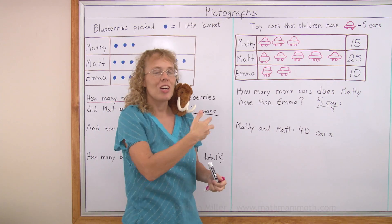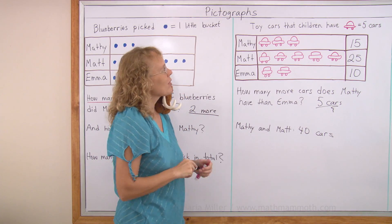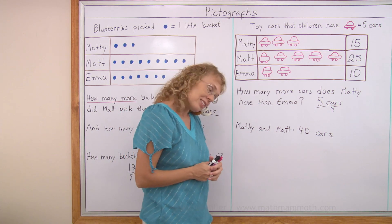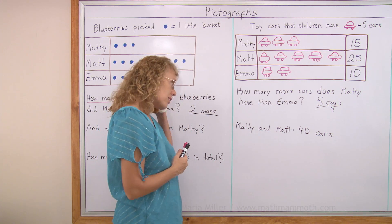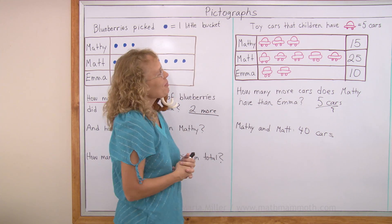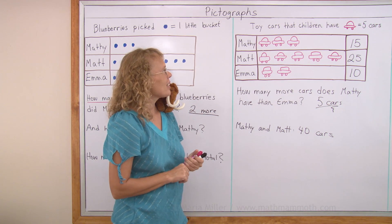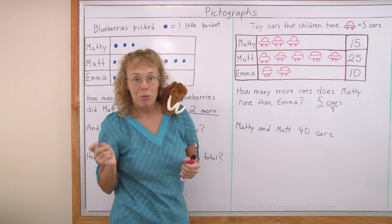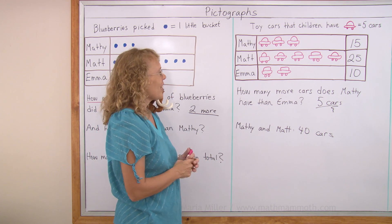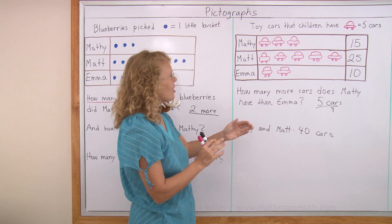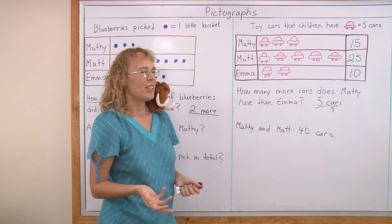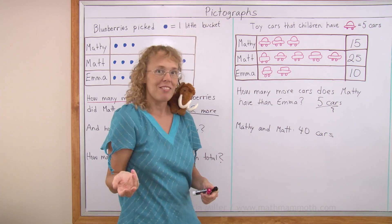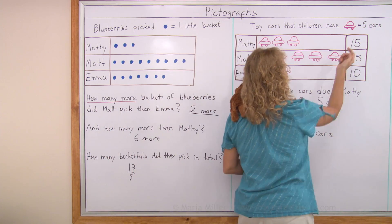Matthew has an interesting idea. Matthew said: how many cars do Matthew and Emma have if Matthew gives one car to Emma? Well, Emma has ten now, so she would have one more — eleven. And you have fifteen, Matthew, so you would have fourteen.